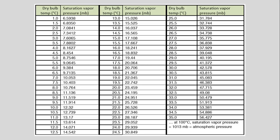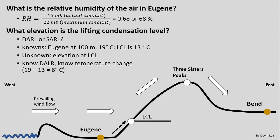Using the same table from Canvas, for 13°C our vapor pressure is about 15 millibars. We can then calculate our relative humidity in Eugene: our actual amount in the air is 15 millibars, and the maximum that can be held at 19°C is about 22 millibars. That gives us about 0.68, or 68% relative humidity. Once we know our vapor pressure and relative humidity for Eugene, we can move on to figuring out the elevation of the lifting condensation level.